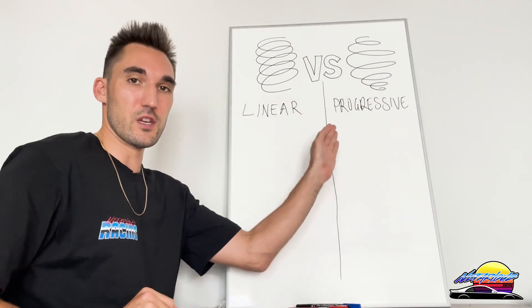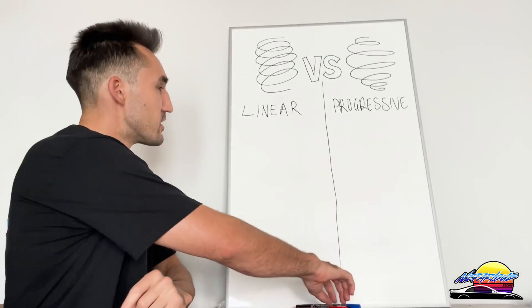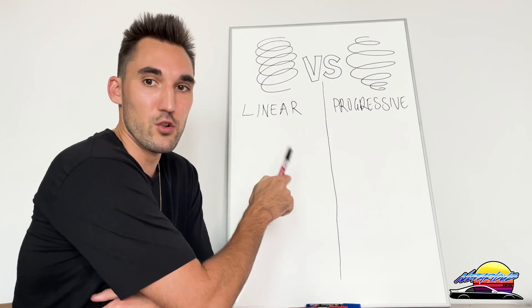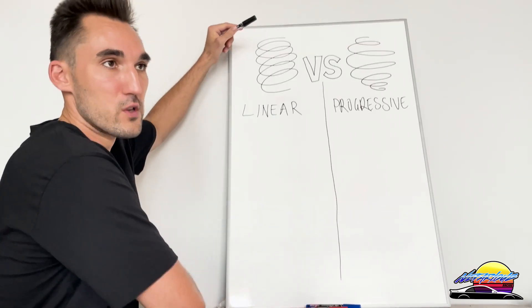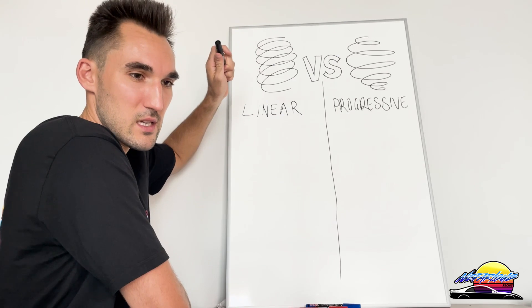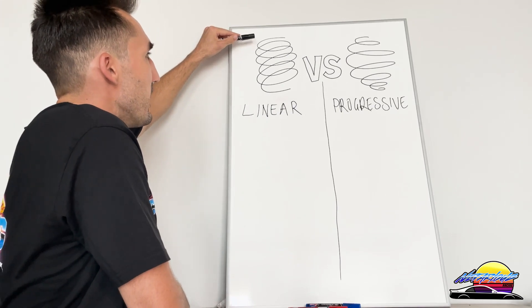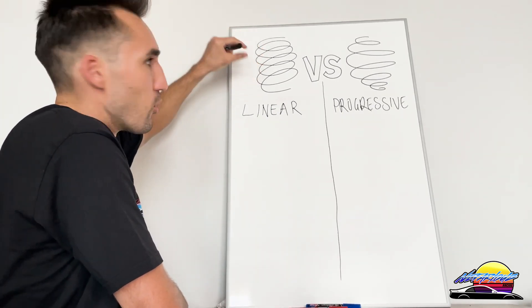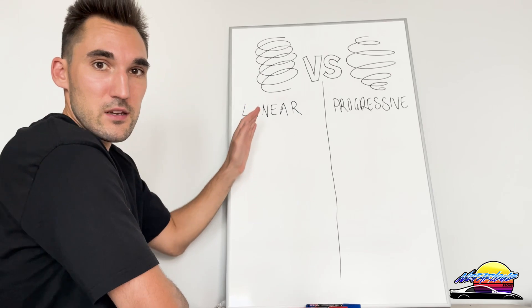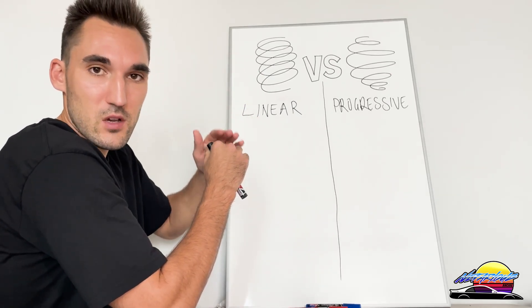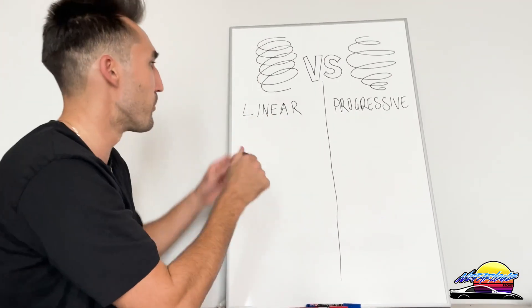There are two different types of springs you're going to come across when looking at suspension kits: the first is the linear spring and the second is the progressive spring. The biggest telltale sign is the way they're actually wound. On linear springs — found in kits like BC Racing, Ohlins, Fortune Auto — the gaps between the coils are all consistent and the same width all the way up and down. There's no difference in the gaps between the coils.